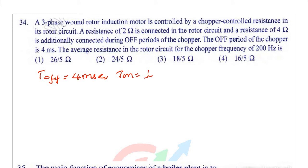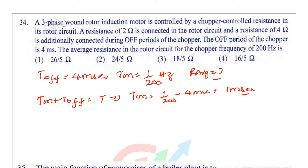So T_off is 4 milliseconds and T_on is 1 over 200 Hz as given in the problem. We need to find the average resistance. We can find T_on plus T_off equals T. From this relationship, if you substitute, T_on equals 1 over 200 minus 4 milliseconds, which is 5 milliseconds minus 4 milliseconds equals 1 millisecond.